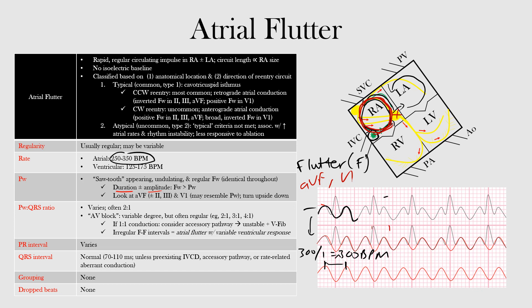We often see some degree of AV block. If the AV block is regular, such as 2:1, 3:1, or 4:1, the ventricular QRS rate will be some fraction of 300. A 2:1 block with an atrial rate of 300 gives a ventricular rate of 150 bpm. A 3:1 block gives 100 bpm, and a 4:1 block gives 75 beats per minute.